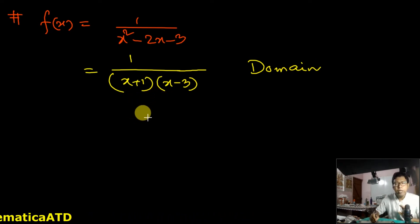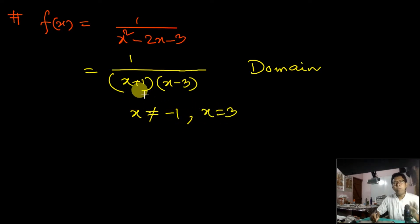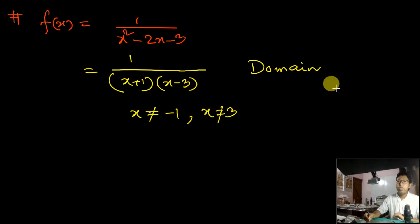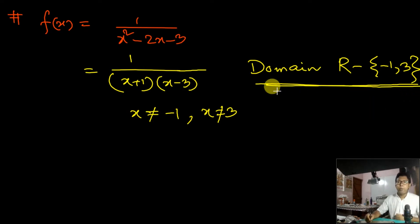The denominator equals 0 when x = −1, making the function invalid. Again, if you put x = 3, the function becomes indeterminate. So you can neither put x = −1 nor x = 3. That means the domain will be R minus these two values: the domain is R − {−1, 3}.